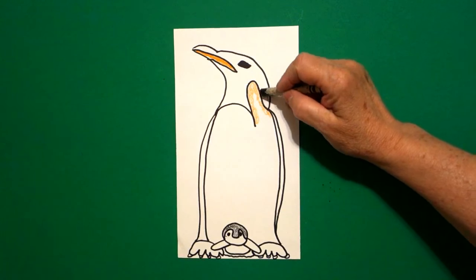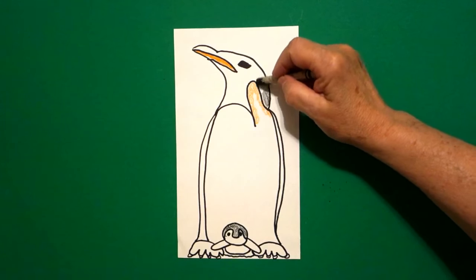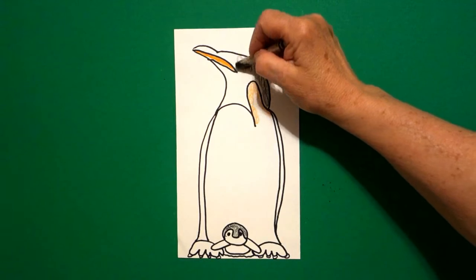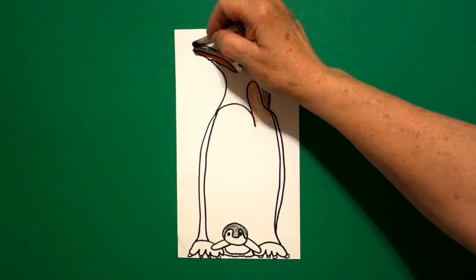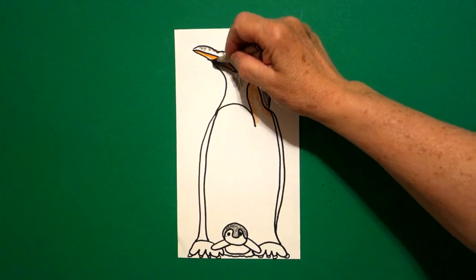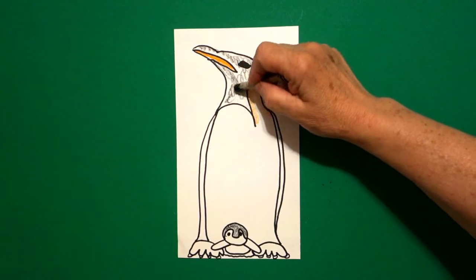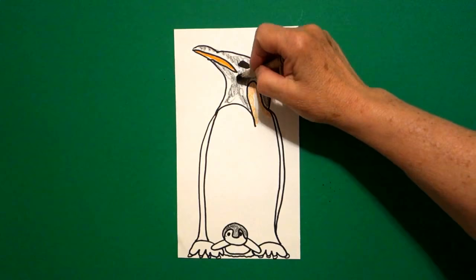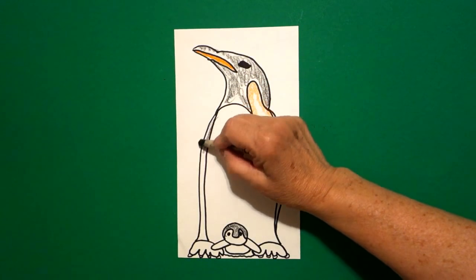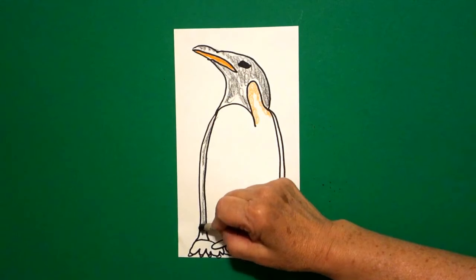And then I come up to Papa, and I'm going to color this whole section black. And again, not so dark that you can't see all the details you just drew.